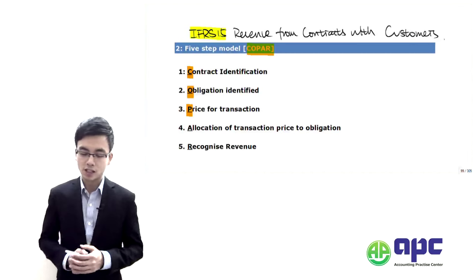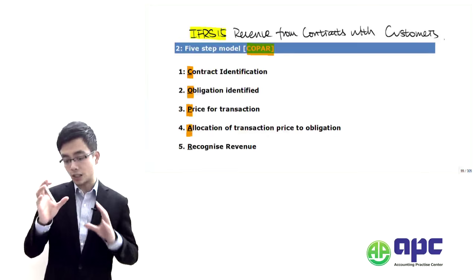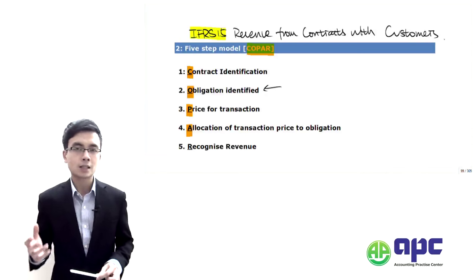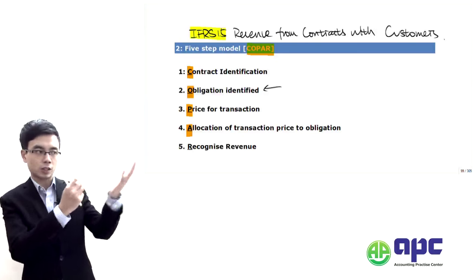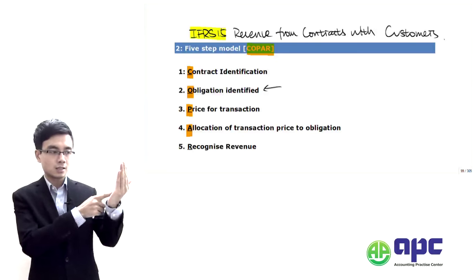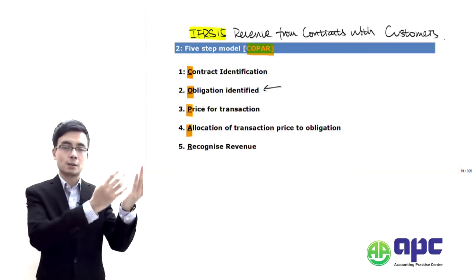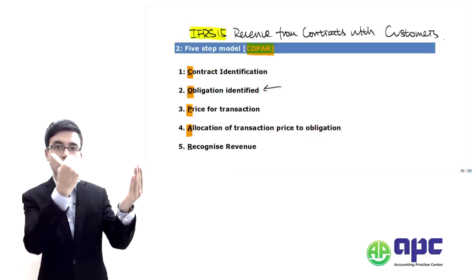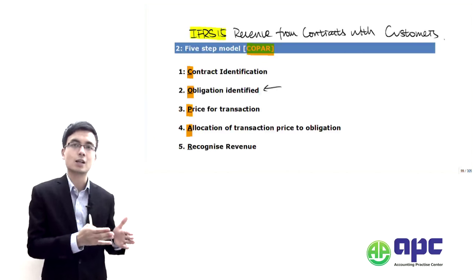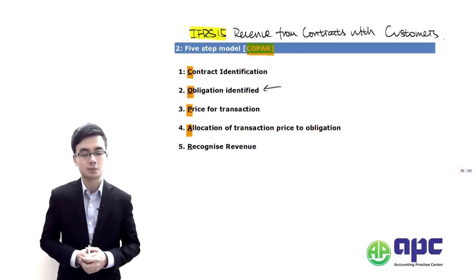Once we've determined the transaction price, step four is to allocate that price to each of the performance obligations identified in step two. Step one is to look at the contract, step two is to identify the obligations, step three is to determine the selling price, and step four is to spread that transaction price into those performance obligations — whether explicit or implicit.